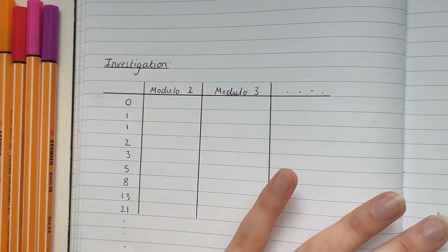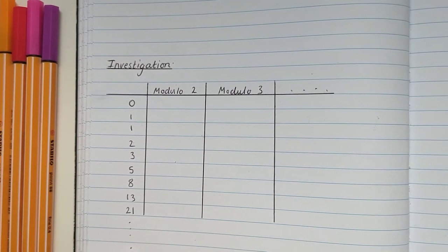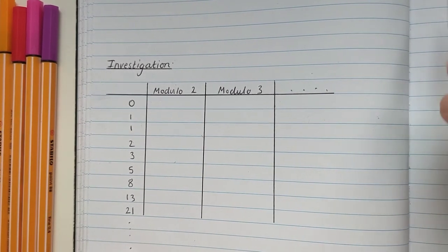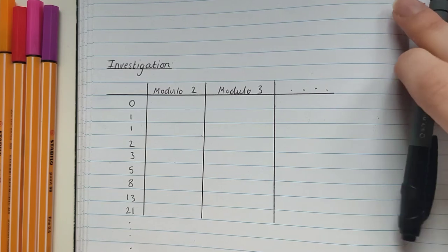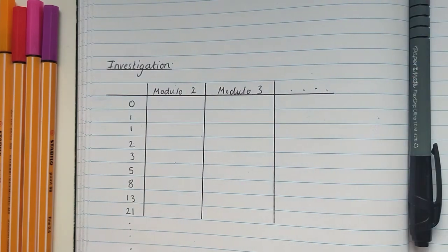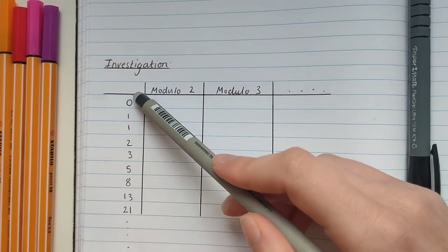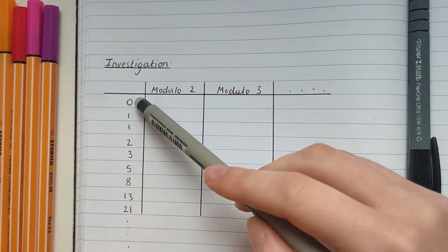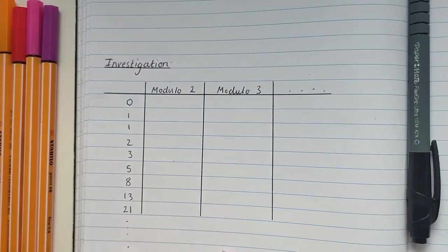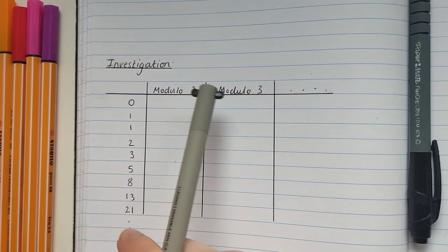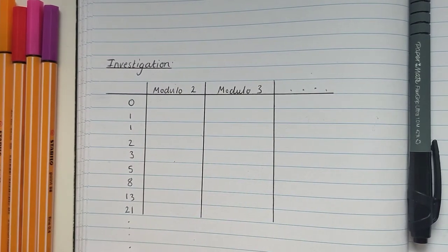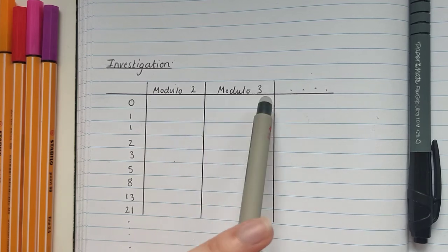All of this is explained on the worksheet, but I'm going to go through and do an example to start with so you know exactly what you need to do. We're going to take the Fibonacci numbers, the ones that we've just worked out, and put them in a column in our table. So I've just done 0 to 21, but you can make your table bigger. Then we're going to pick some numbers. To start with I've picked 2 and 3.